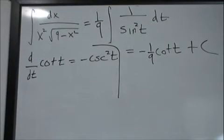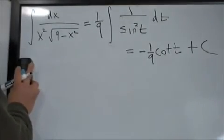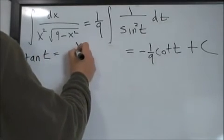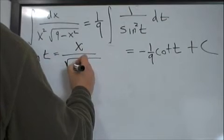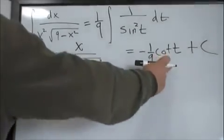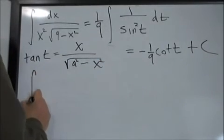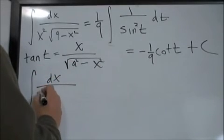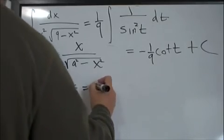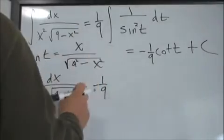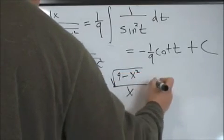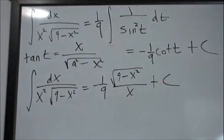Now we invert using the formulas derived earlier: tan(t) = x/√(a²-x²), and with a = 3 we have tan(t) = x/√(9-x²). Since we have cot(t), we just invert that expression. Therefore the final answer is: ∫ dx/(x²·√(9-x²)) = -(1/9)·√(9-x²)/x + C.